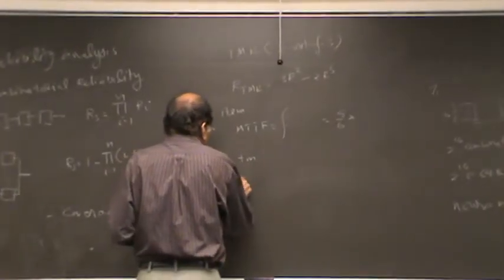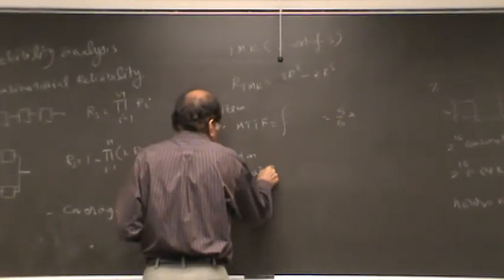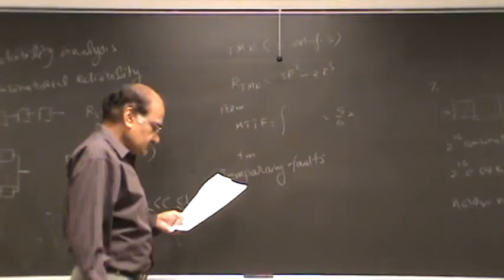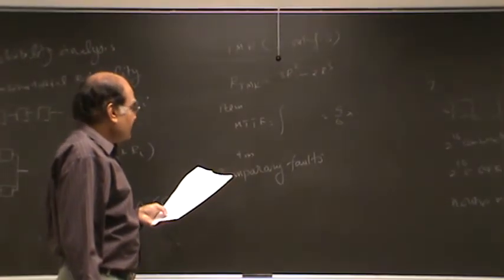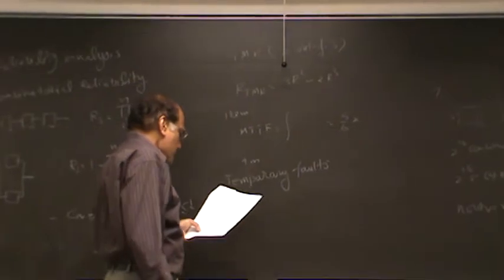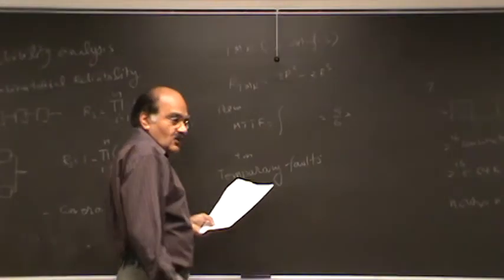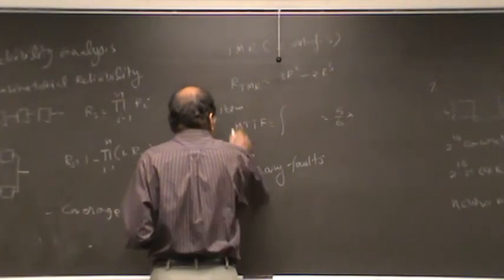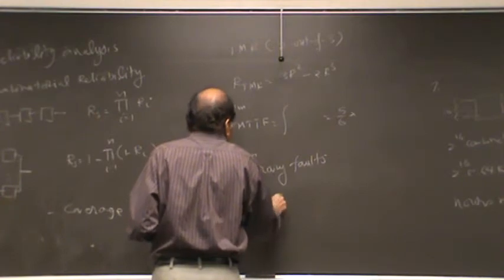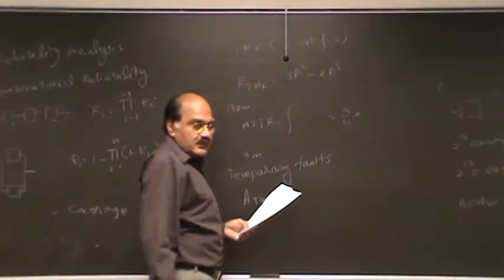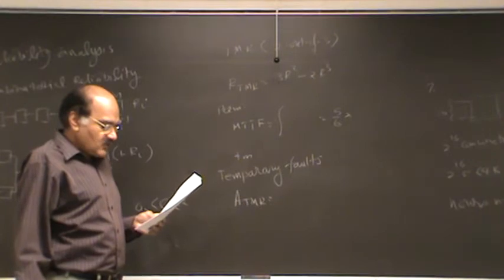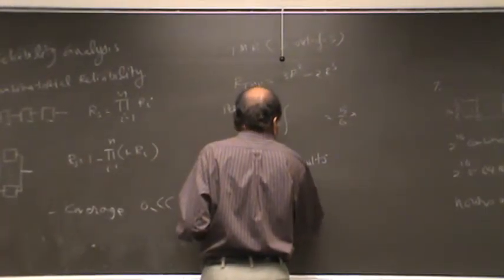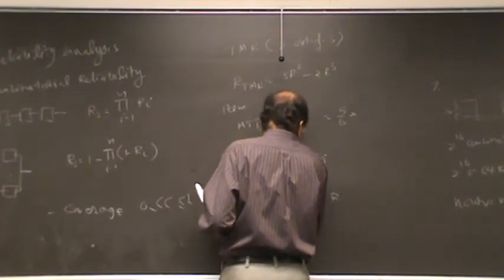Now let's consider temporary faults. For temporary faults, we can talk about a steady state case. We can write availability for TMR. The combinatorial expressions will work for availability also, except that we have to write as 3a squared minus 2a cubed.